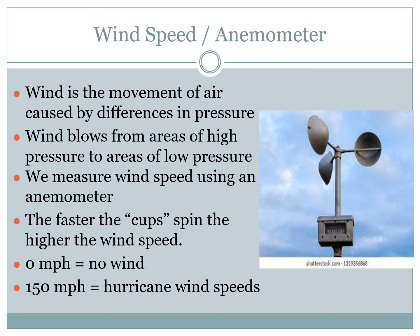We know that wind speed is increasing or decreasing by looking at how fast those little cups are spinning — the faster they spin, the higher the wind. A good benchmark would be zero miles per hour, meaning no wind at all, while 150 miles per hour means you've got hurricane wind speeds and need to take shelter. Those are our basic weather tools used to measure different aspects of our weather.